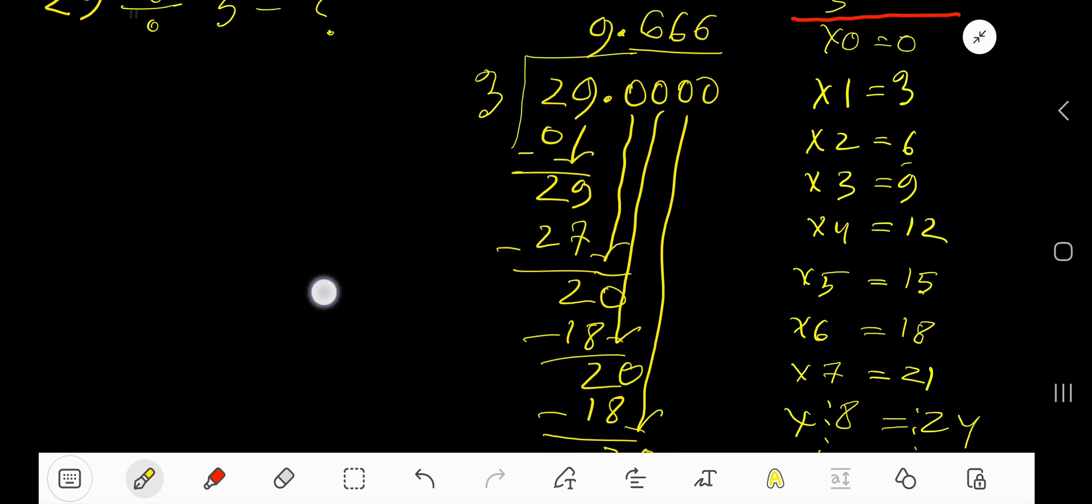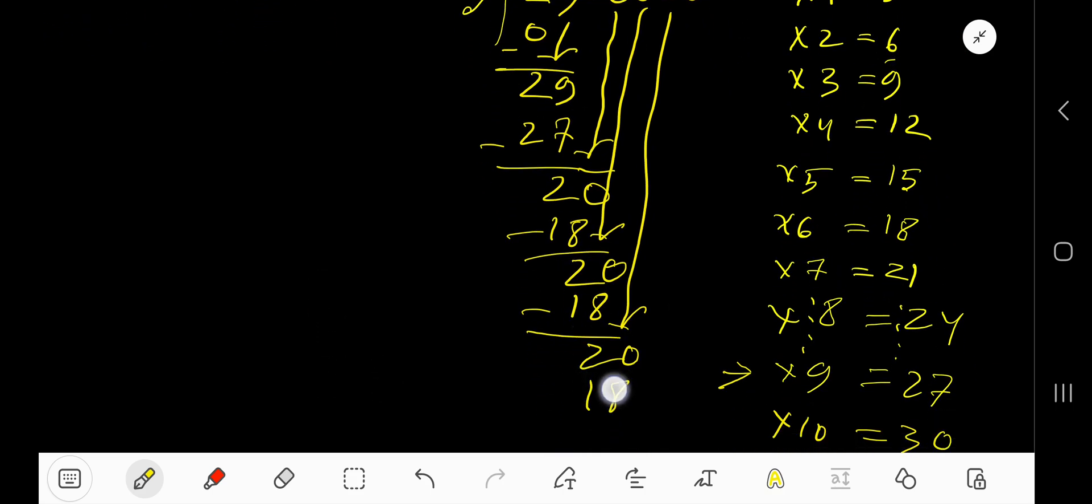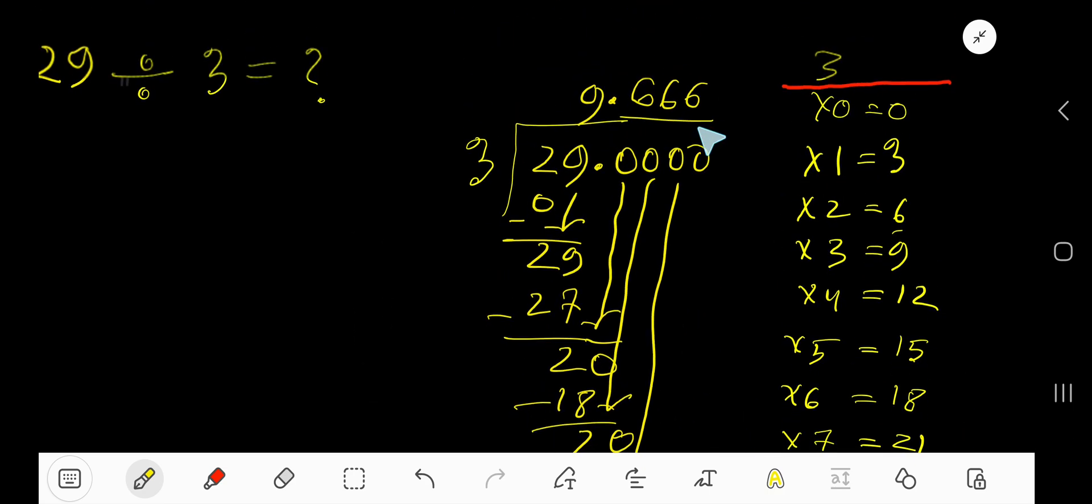6 times 3, which is 18. Subtract 2. You can bring down more 0s, but since we have gotten 3 digits after decimal, now you can place here 3 dot. So 9.666 dot dot dot is our answer. You can also place here bar over 6. This means that this 6 is repeating, so 9.6 bar is our answer.